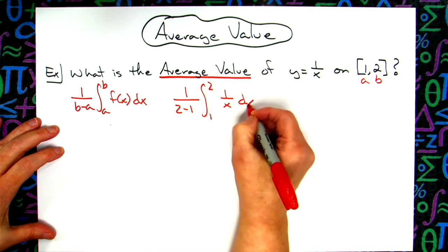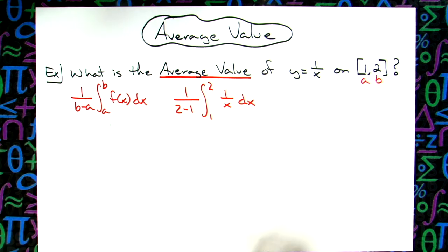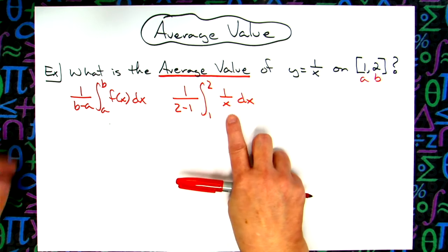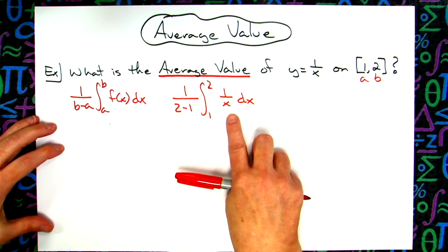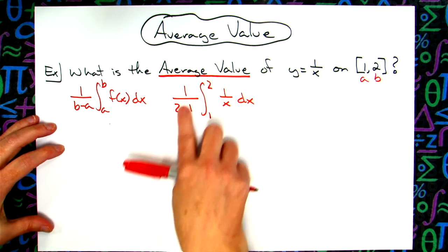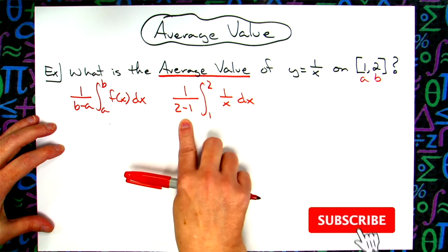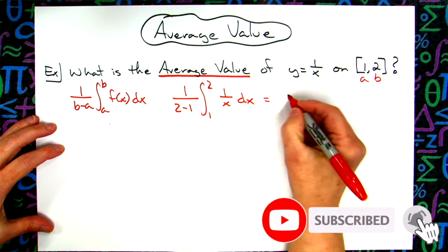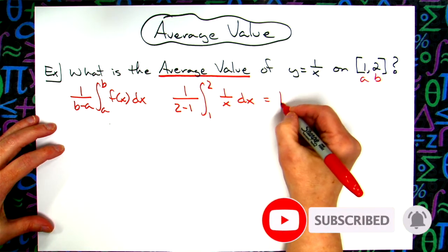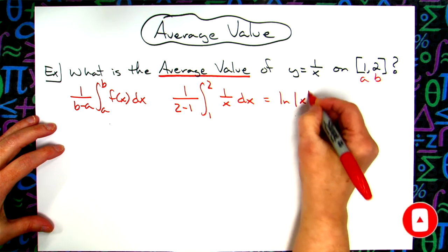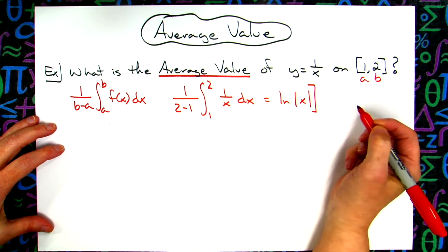Now this one's a pretty straightforward integration. We know this is the natural log absolute value of x. 2 minus 1 just gives me a 1 here in front, so then I'm going to have the natural log absolute value of x, and then we need to evaluate that from 1 to 2.